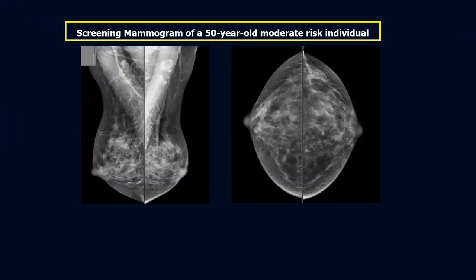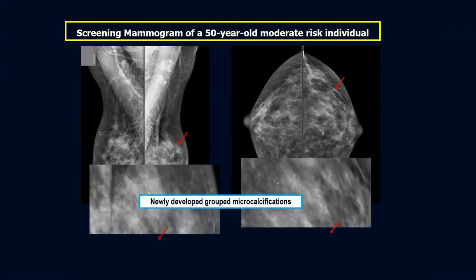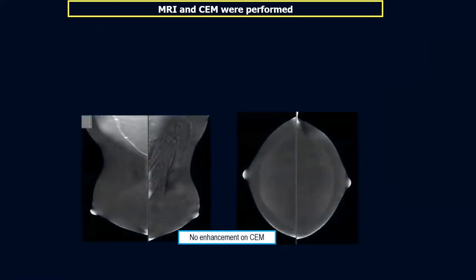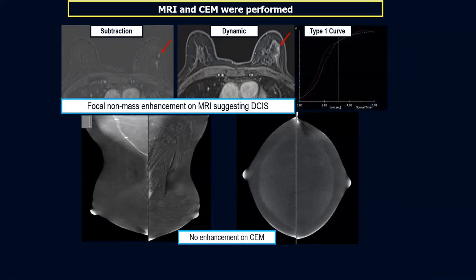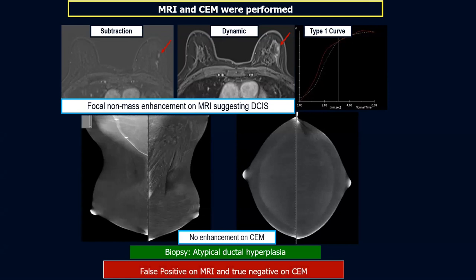Another case: a 50-year-old moderate risk individual with dense breast parenchyma had newly developed grouped microcalcifications in the left breast. Contrast mammography showed no contrast uptake, while MRI showed two adjacent areas of focal non-mass enhancement giving the impression of DCIS. The lesion was biopsied and surgically removed, revealing atypical ductal hyperplasia — a false positive for MRI and true negative for contrast mammography. However, we have to admit that in this specific situation, the false positive MRI was actually for the patient's benefit, because atypical ductal hyperplasia is the last step before transformation into DCIS.